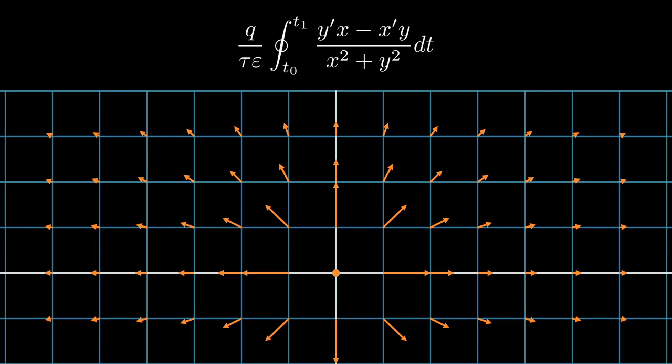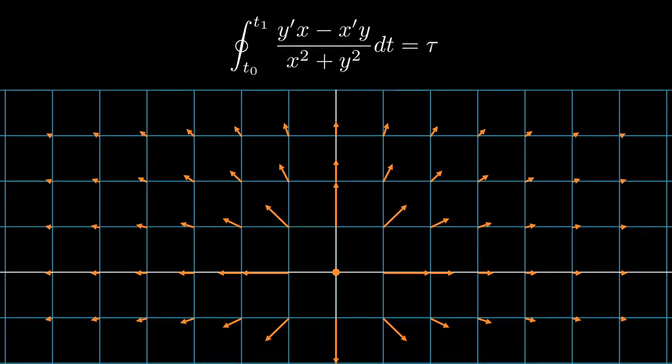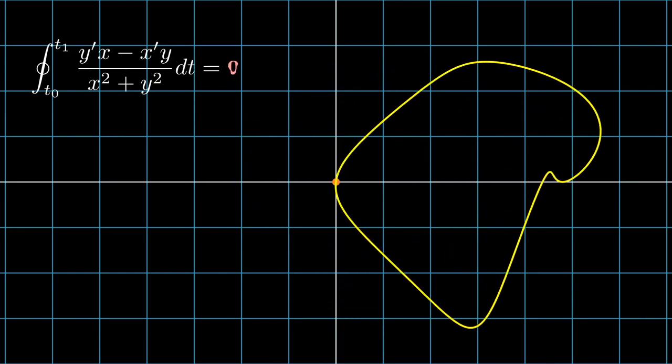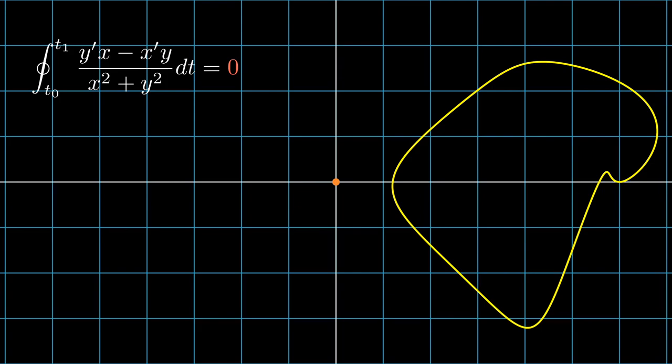Knowing that this integral equals q over epsilon naught, I can cancel out the q over epsilon naughts on both sides and multiply over the tau. Now, I need to simplify the integral to a function that equals tau for closed lines that contain the origin and 0 for closed lines that don't contain the origin, which is when the closed line doesn't contain the point charge.